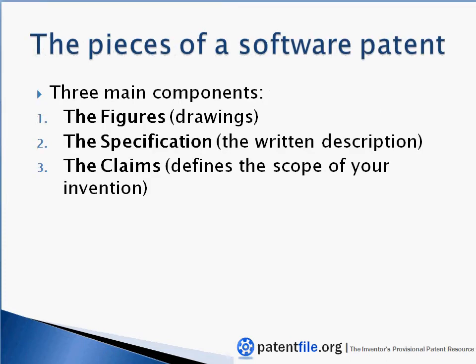The three different components or three different pieces for any patent application, including a software patent application, are the figures, which you're going to use to show what your invention looks like, the specification, which you're going to use to describe what your invention is and how it works, and the claims, which defines the scope of your invention, and that's actually what gives you your patent rights or your patent coverage.